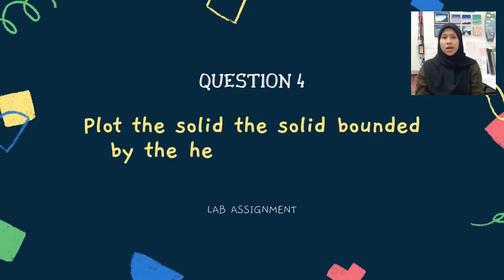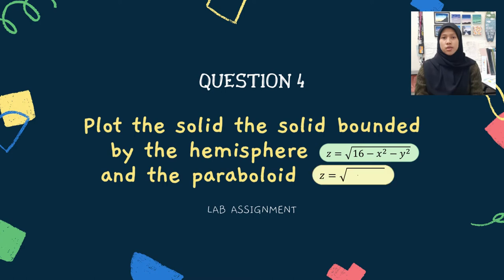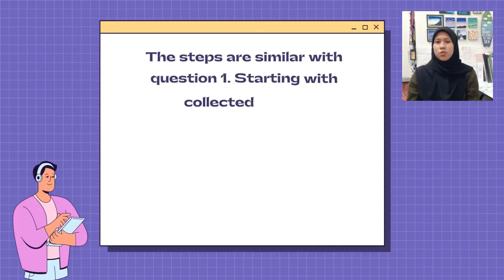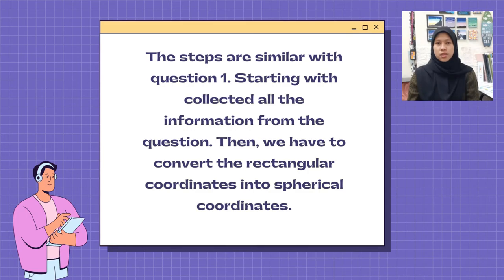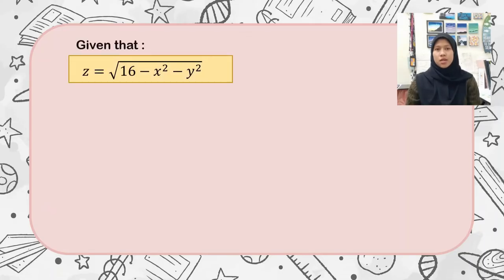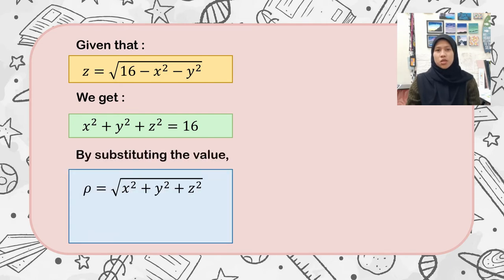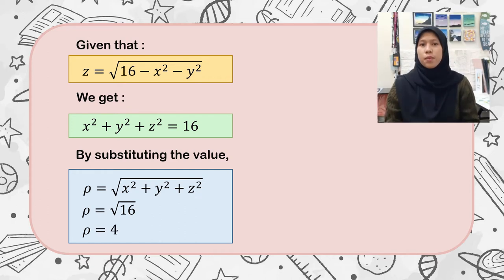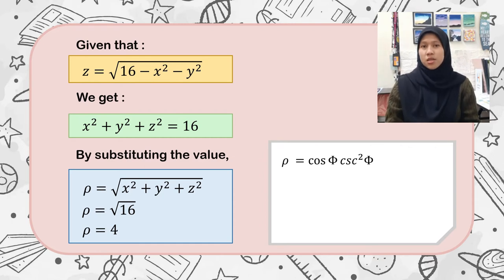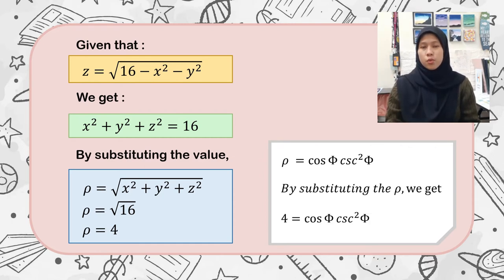Last but not least, let's do Question 4. The question asks us to plot the solid bounded by the hemisphere Z equal to square root of 16 minus X square minus Y square, and the paraboloid Z equal to X square plus Y square. The steps are similar to Question 1. Starting by collecting all information from the question, we convert rectangular coordinates into spherical coordinates. From Z equal to √(16 − X² − Y²), we get X square plus Y square plus Z square equal to 16. Using the formula ρ equal to √(X² + Y² + Z²), substituting gives ρ equal to 4. The spherical paraboloid formula is ρ equal to cos φ cosecant square φ. Substituting ρ equal to 4, we get 4 equal to cos φ cosecant square φ.